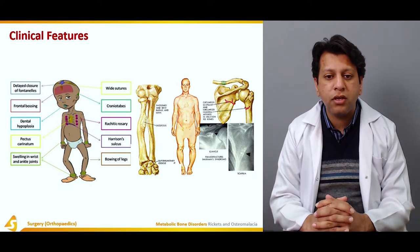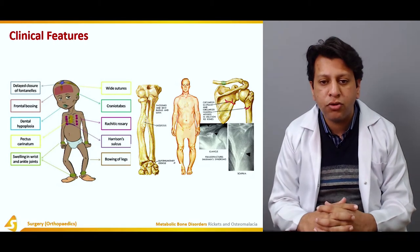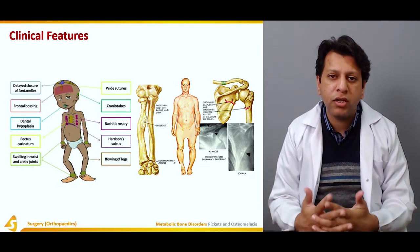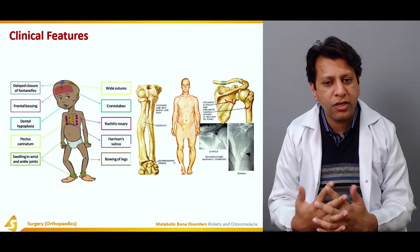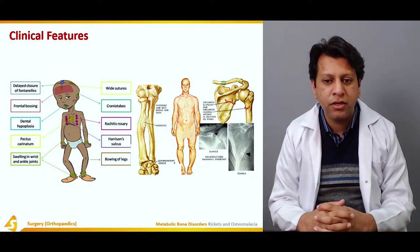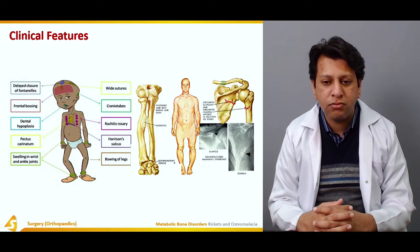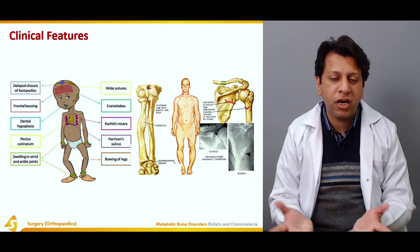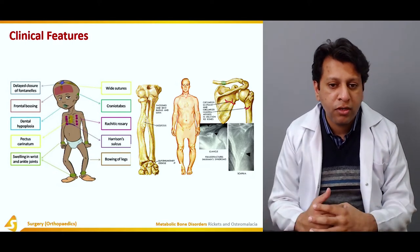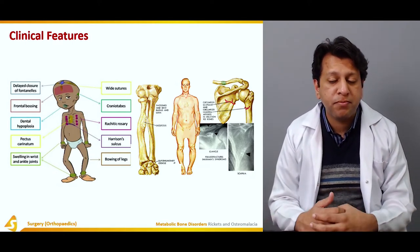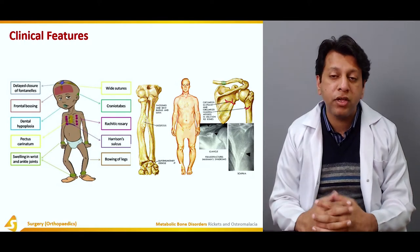The clinical features of rickets in a child include delayed closure of the fontanelle — normally closed by 12 to 18 months, but in rickets it may remain open until three or four years of age — resulting in wide suture appearance. There is also frontal bossing.